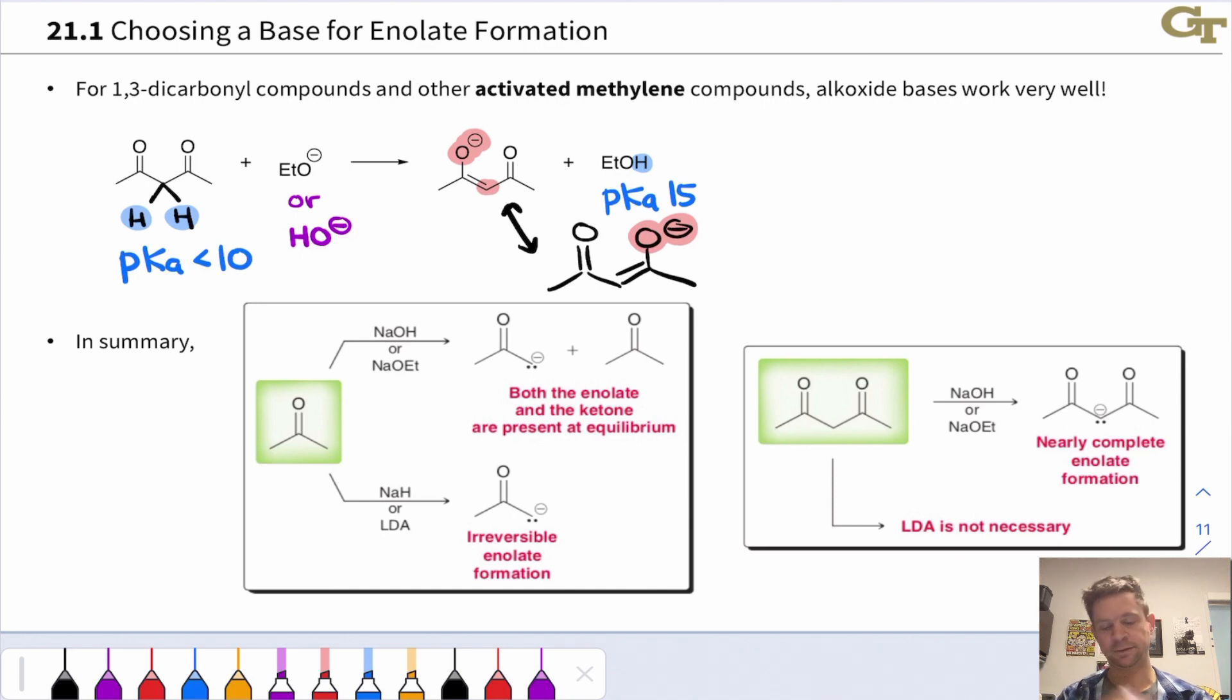The figure at the bottom of this slide essentially summarizes the discussion to this point in terms of choosing a base for enolate formation. We use an alkoxide base in conjunction with plain vanilla ketone such as acetone, we get small amounts of the enolate at equilibrium. And in equilibrium we have a mixture of the enolate and the starting acetone with acetone predominating here based on pKa arguments. If we use a stronger base like sodium hydride or LDA, we get irreversible and complete formation of the enolate. So at equilibrium there is no carbonyl compound left, there's no neutral keto form left, the enolate is all that's present in solution.